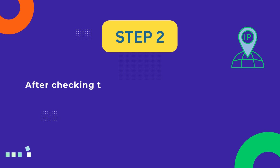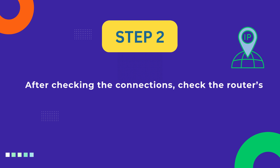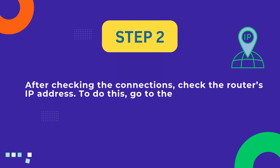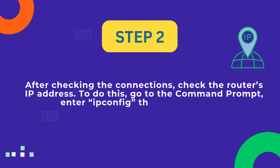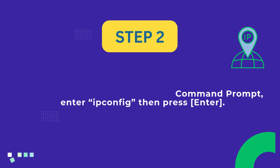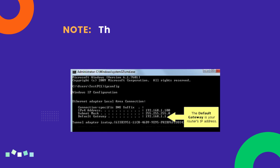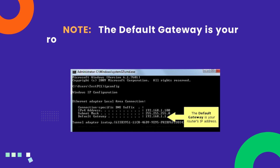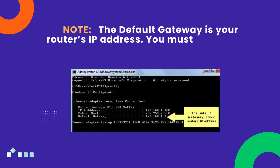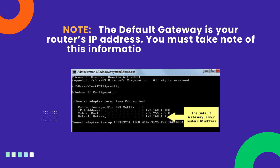Step 2: After checking the connections, check the router's IP address. To do this, go to the command prompt, enter IP protocol configuration, then press Enter. Note: the default gateway is your router's IP address. You must take note of this information for the next step.